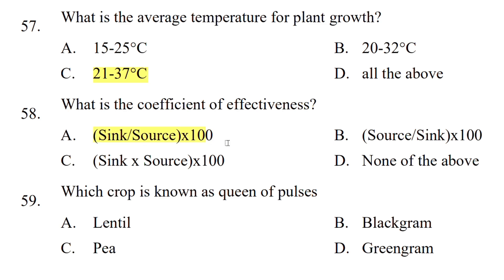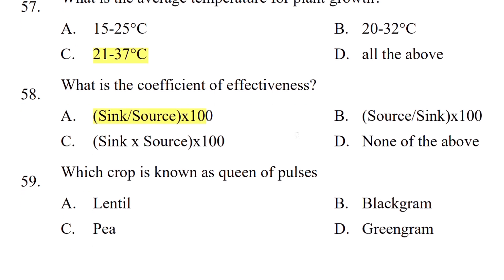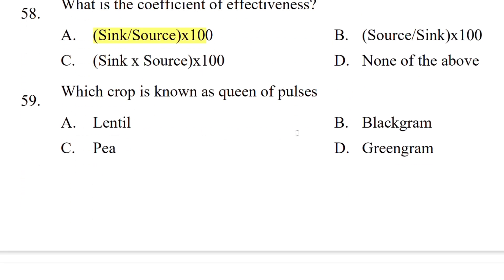Which crop is known as queen of pulses? The options are lentil, black gram, pea, or green gram. The correct answer is pea.